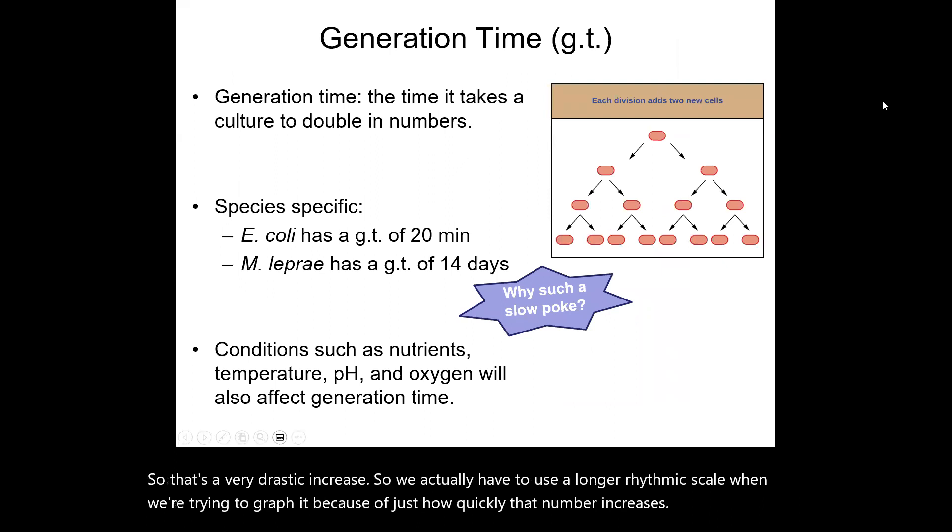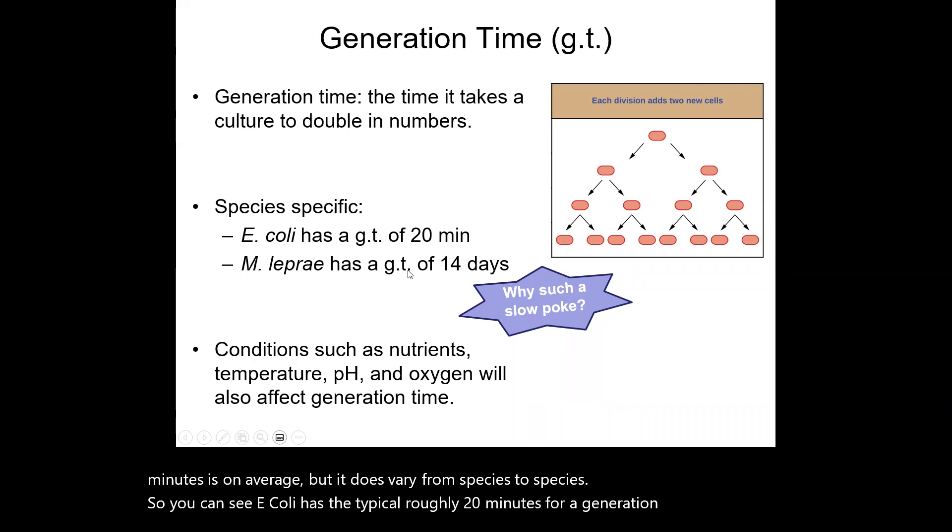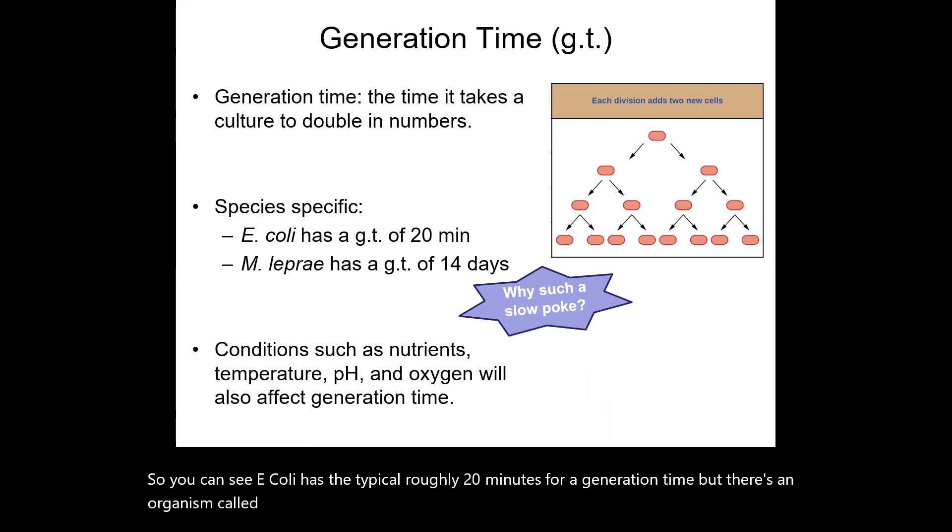So here's another visual showing binary fission, but what we really want to drive home here is the idea of generation time, which is how long it takes for the culture to double in size. So 20 minutes is on average, but it does vary from species to species. So you can see E. coli has the typical roughly 20 minutes for a generation time. But there's an organism called Mycobacterium, it's a genus actually.